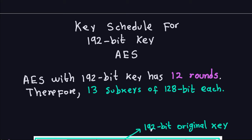What's going to change is a little bit of the diagram that we saw last time. We're still going to use the function G, which is exactly the same as before. The Advanced Encryption Standard, when you have a 192-bit key, remember that the key length determines the number of rounds. With a 192-bit key, it has 12 rounds.